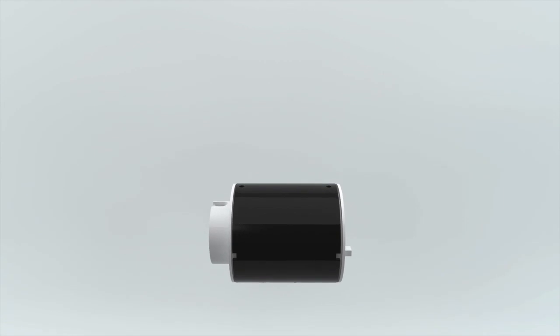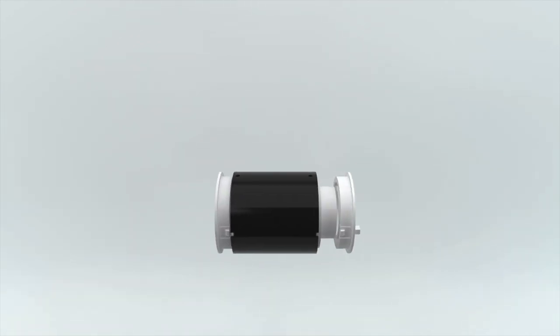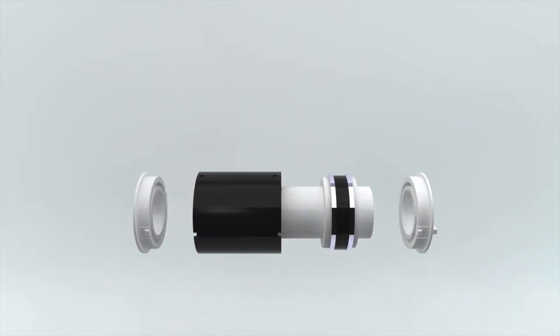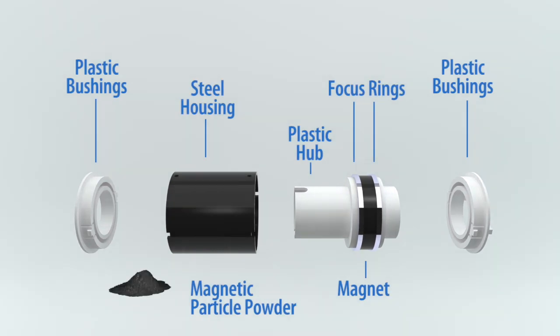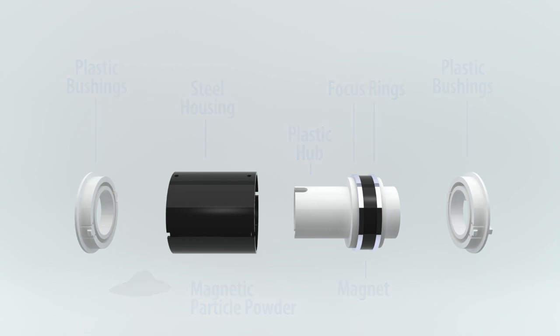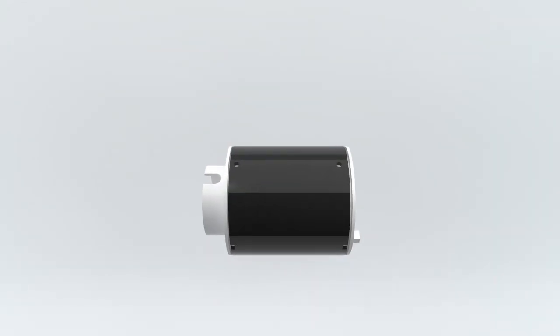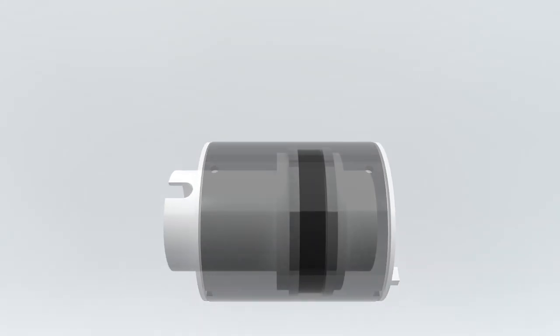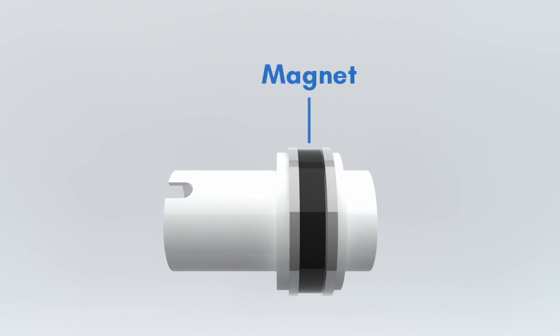OPL units consist of an integral shaft or through bore, plastic bushings or bearings for higher speed, steel housing, plastic hub, focus rings, permanent magnet, and magnetic particle powder. The OPL units use a permanent magnet or multiple magnets embedded into a plastic hub that is attached to the inner rotating member.